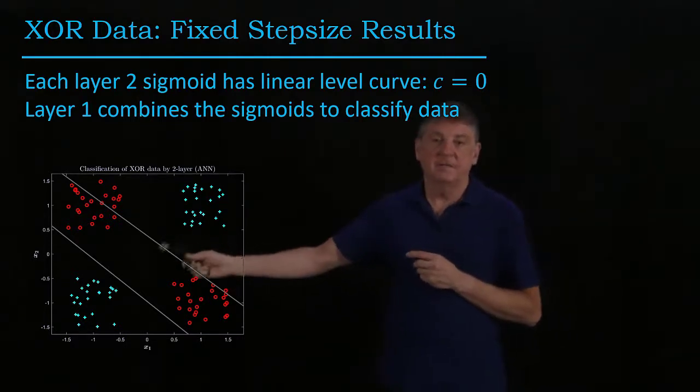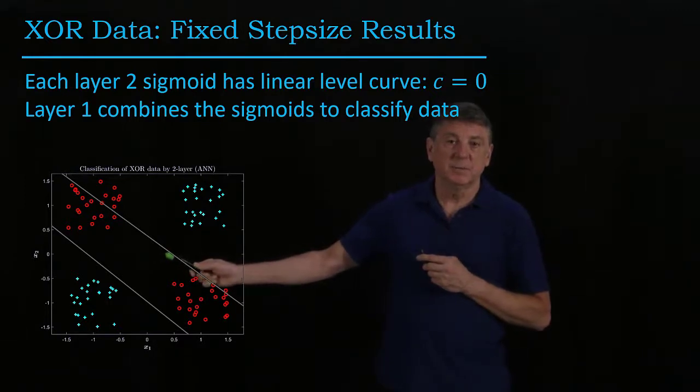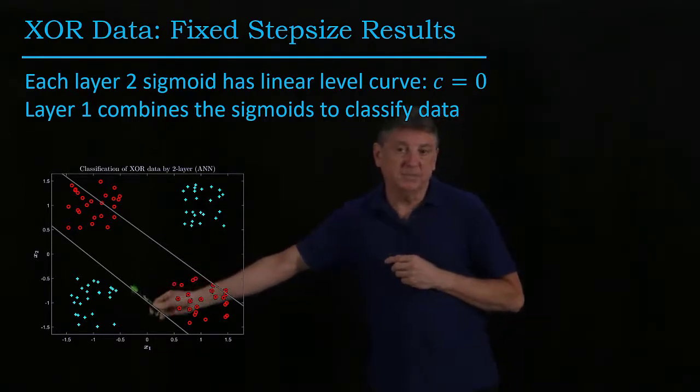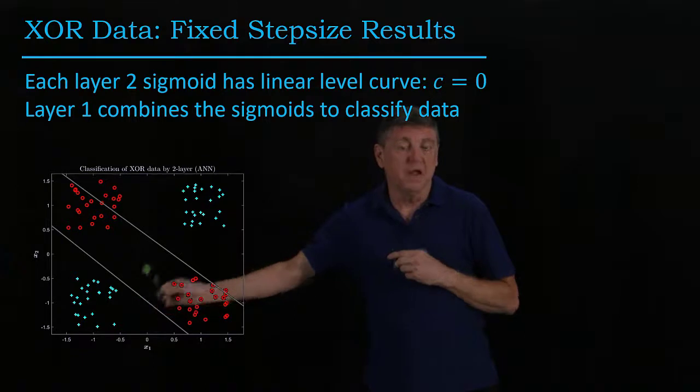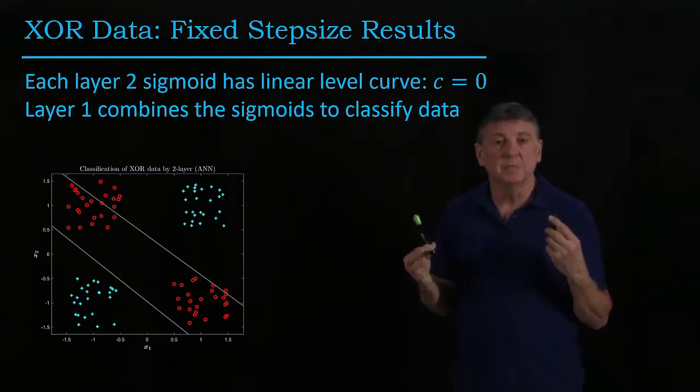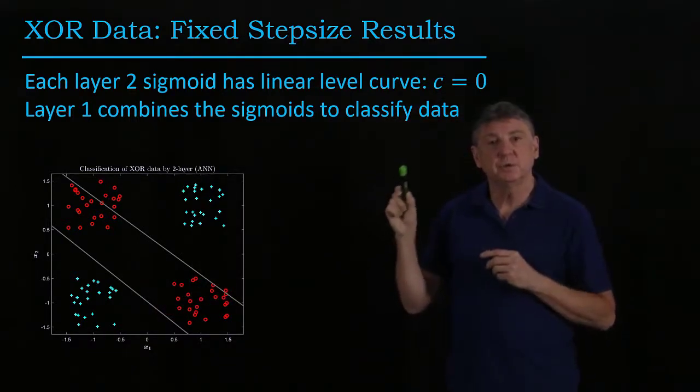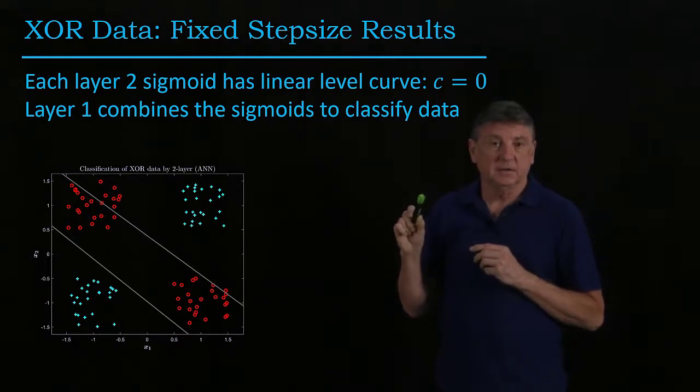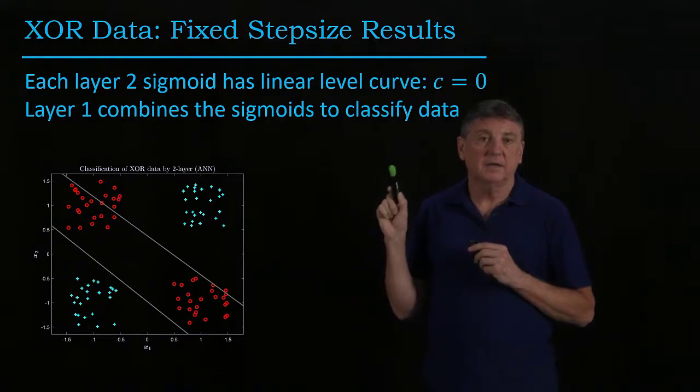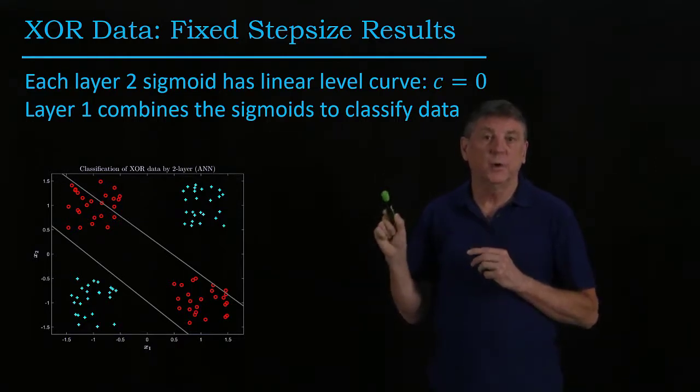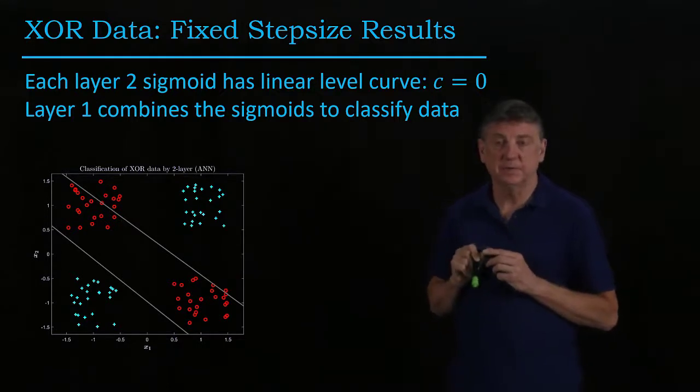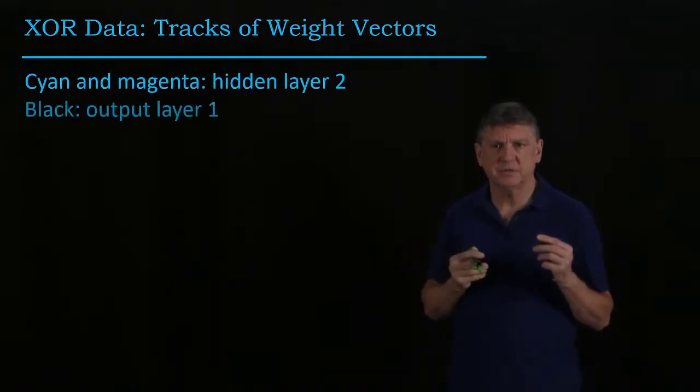So we can have a vector in three space that represents the augmented weight vector for one hidden neuron. We can have a different one for number two, and then we can have a third one for number three, because when we take these two hidden neurons together, that they would have a simple weight vector of size two, and then we add its bias term and three. So let's take a look at what happens with these tracks.